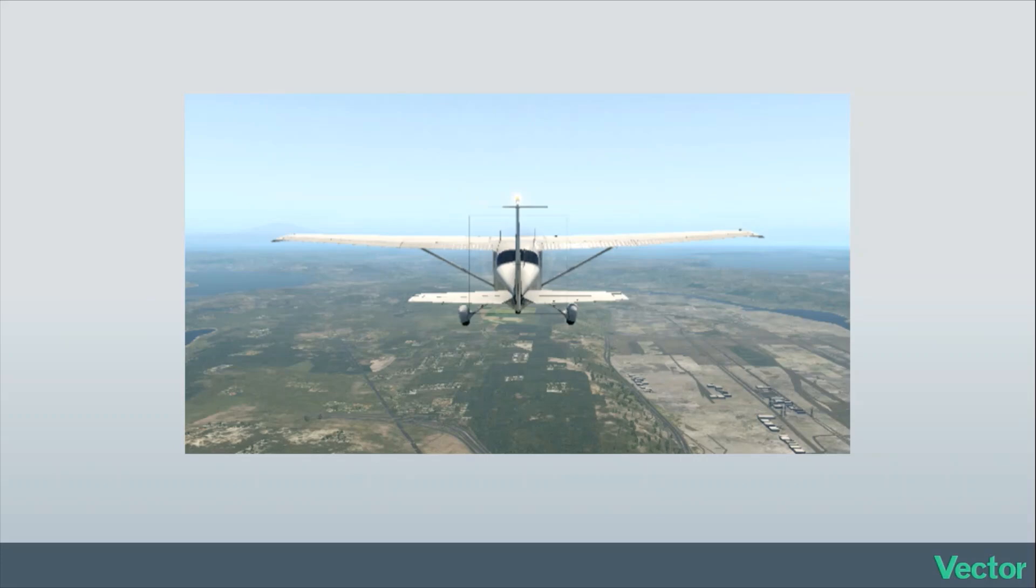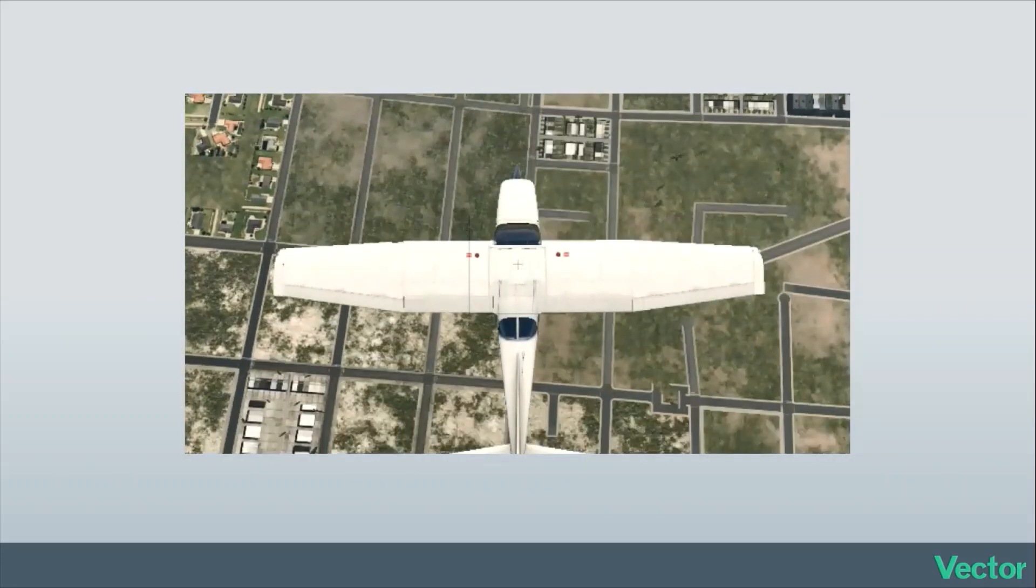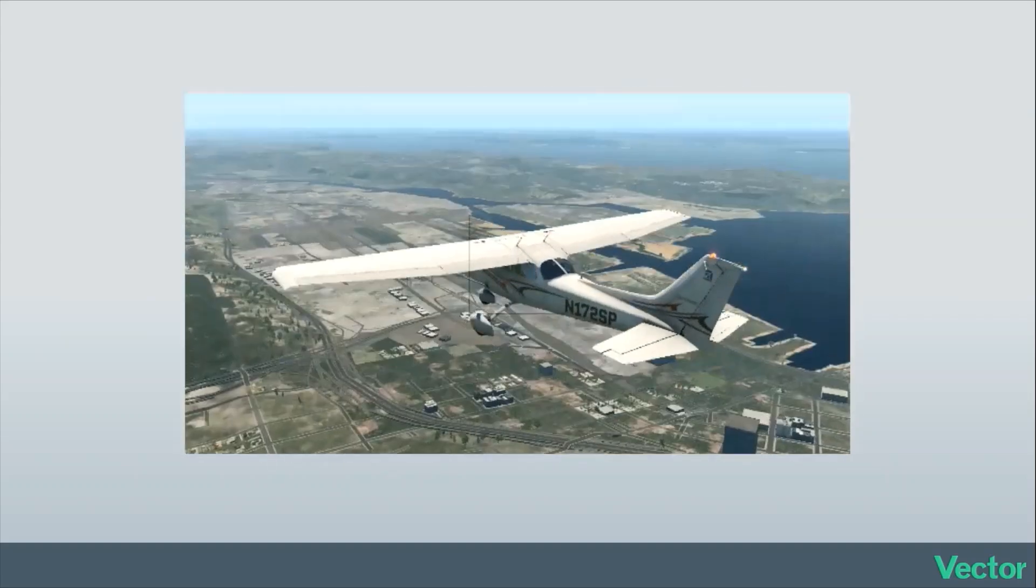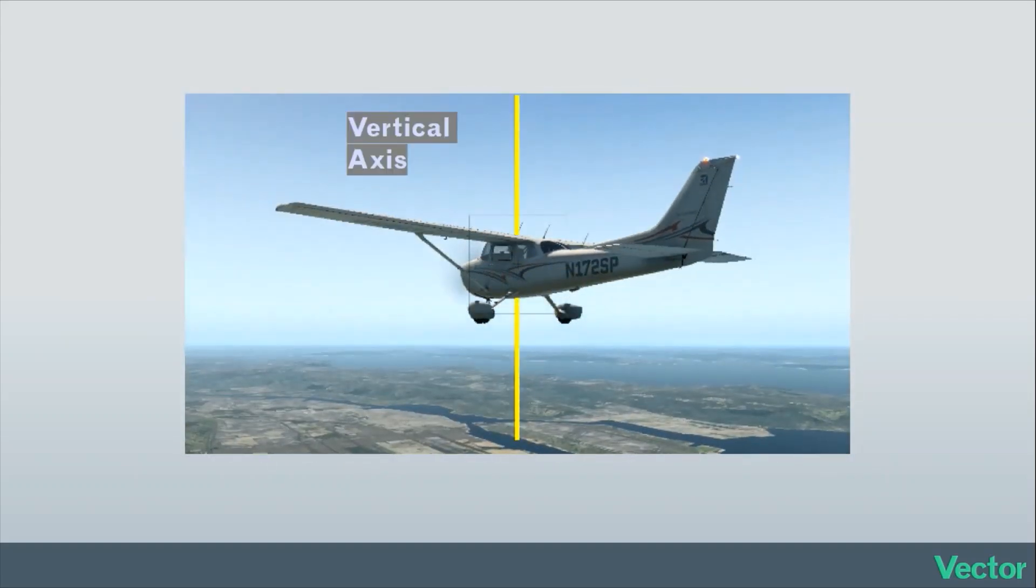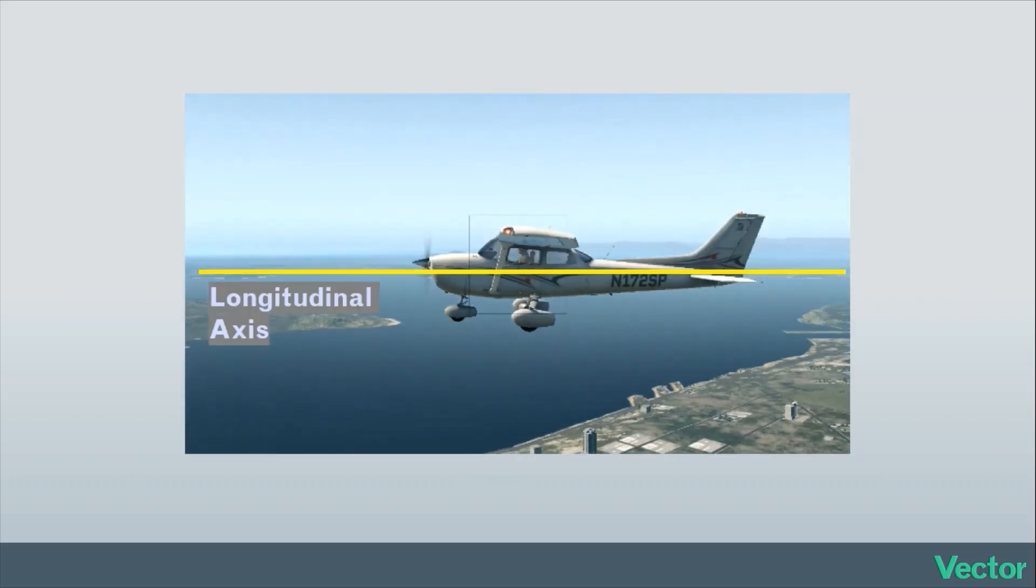Airplanes move in three dimensions. We can control pitch, roll, and yaw. So they move around three axes. The lateral axis, which extends from wingtip to wingtip. The vertical axis, which extends up through the middle. And then the longitudinal axis, which extends from the nose through the tail.